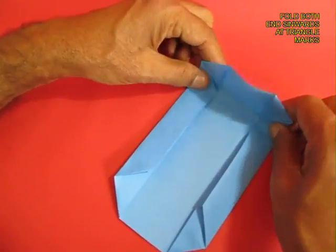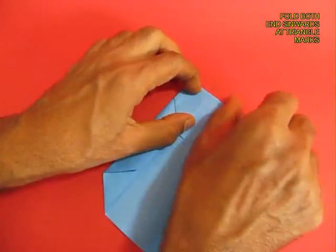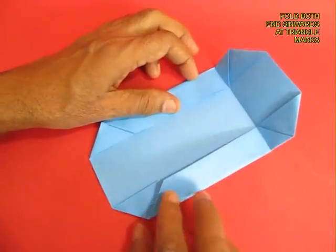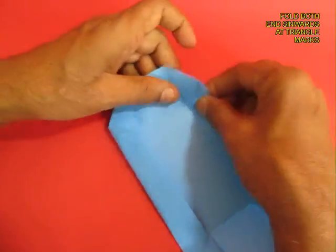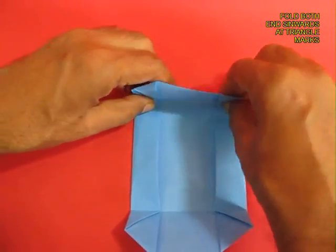Now fold along the triangles, fold the model inwards on both sides and this would make the tumbler.